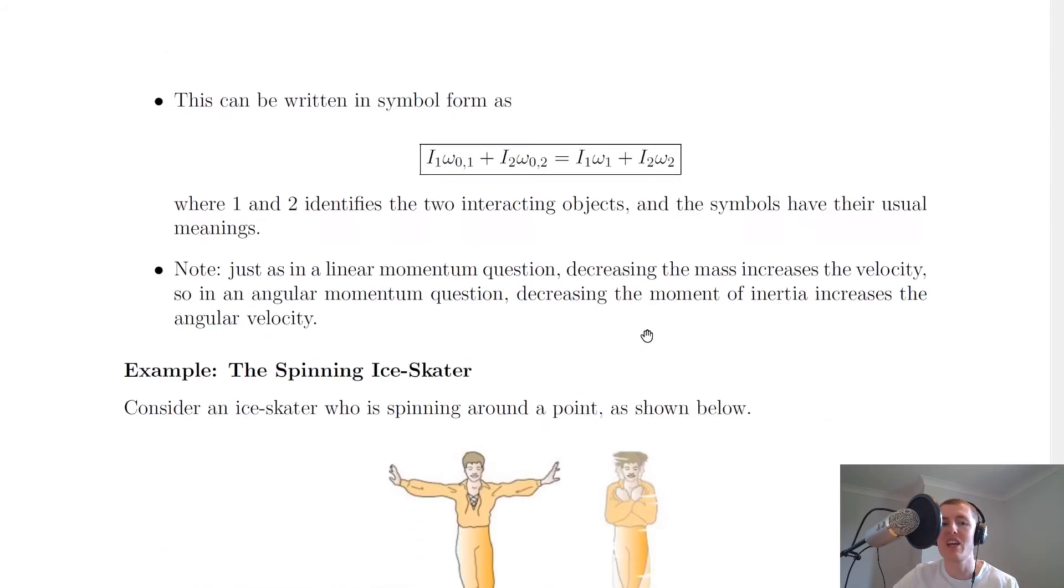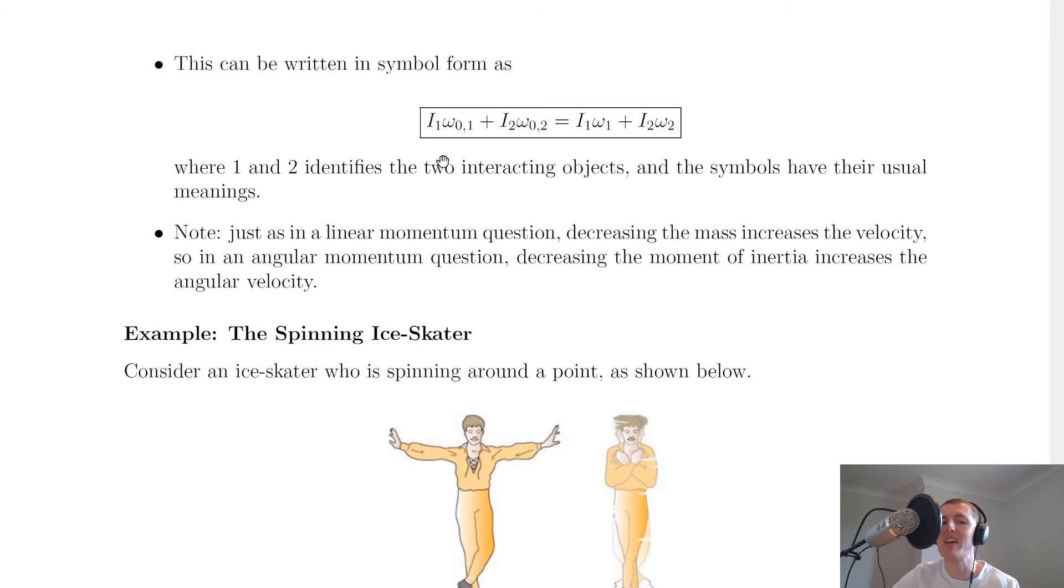If we look at that, it says this can be written in symbol form as I1 omega 0 1 plus I2 omega 0 2 is equal to I1 omega 1 plus I2 omega 2. This looks kind of complicated, but let's break it down into what they mean. So 1 and 2 identifies the two interacting objects. There's my first object, there's my second object, and that is my before motion. And then there's my first object and my second object, and that is my after motion.